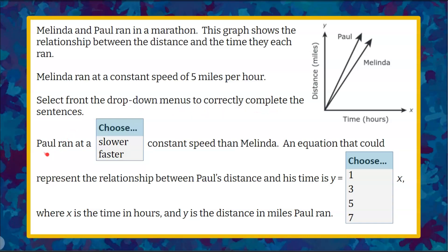Here's the first sentence. Paul ran at a, and you're going to pick slower or faster, constant speed than Melinda. An equation that could represent the relationship between Paul's distance and his time is y equals, and you're going to pick one of these four values, times x, where x is the time in hours and y is the distance in miles that Paul ran.